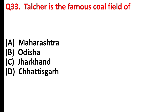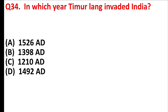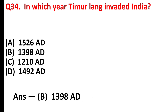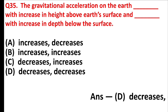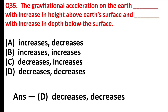Salter is the famous pole dance of Answer is Option B: Odisha. In which year did Timur Lang invade India? Answer is Option B: 1398 A.D. The gravitational acceleration on the Earth decreases with increase in height above Earth's surface and decreases with increase in depth below the surface. Answer is Option D: Decreases, Decreases.